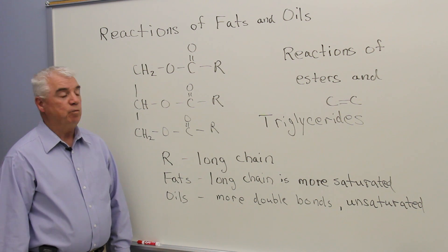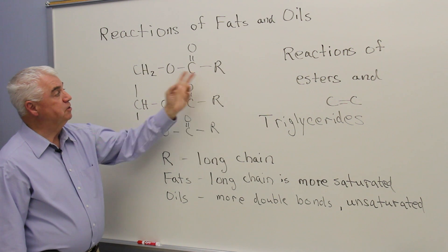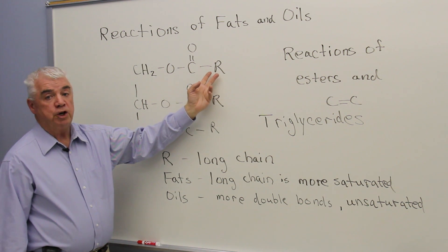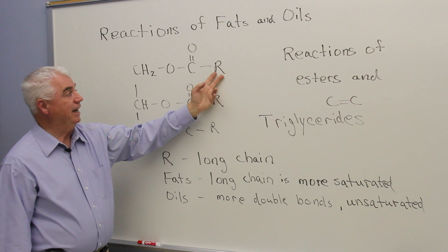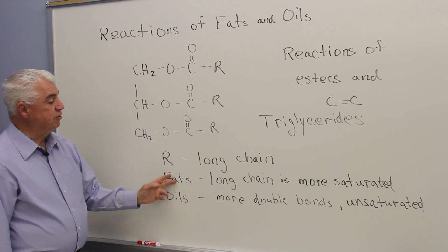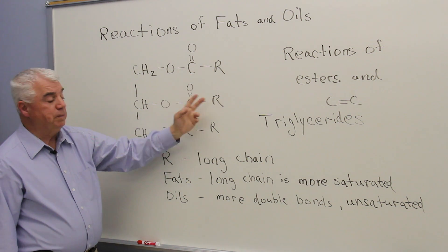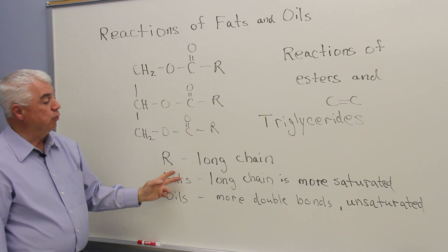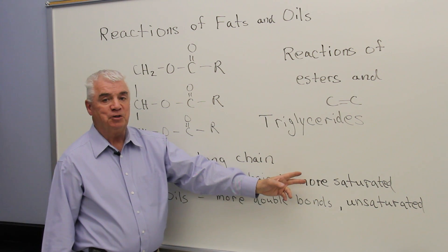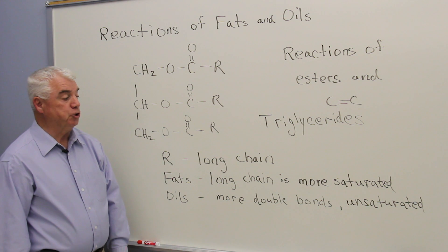R can be anything — we haven't specified what it is — but with fats and oils, R is usually a long chain fatty acid component. In the case of fats, this R group is not only long chain, but it has few double bonds in it. That is, it's pretty saturated.